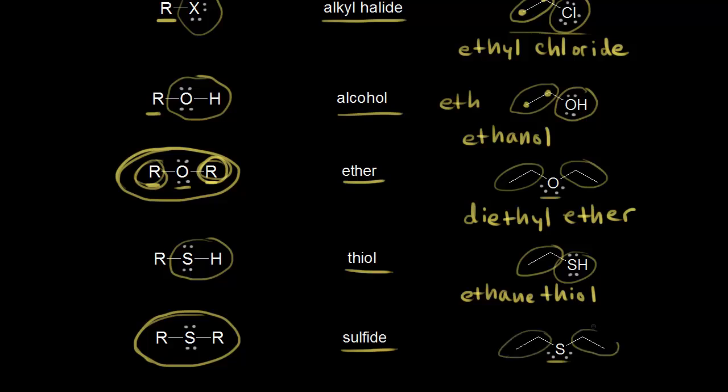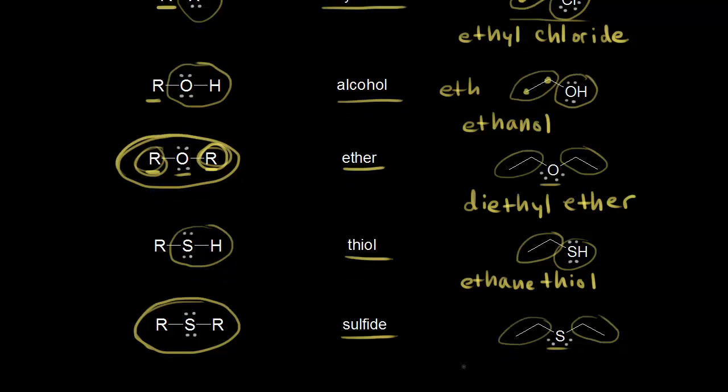On the right here's our sulfur, and again we have two ethyl groups. So you can call this diethyl sulfide. Let me write that out here. This is diethyl sulfide.